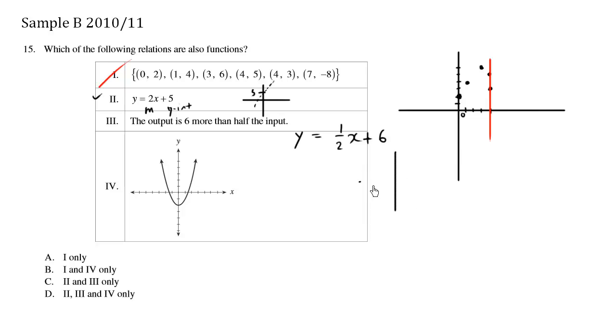So this is the line equation we're thinking about. And when you can visualize the line equation, this being the 6 being the y-intercept, a slope of a half would be something that looks like this. So this here, again, is a straight line. It's going to pass the vertical line test everywhere. So this here is also a function.